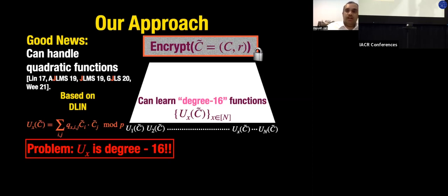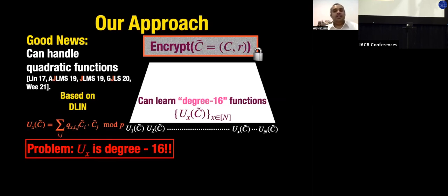What we do in this work is come up with a way to pre-process C̃ such that the pre-processing is efficient and at the same time the degree reduces to 2 — so U_x(C̃) can be computed by a degree-2 polynomial over the pre-processed C̃. You shouldn't expect this to work for arbitrary degree-16 computations with a simultaneously short pre-processing.